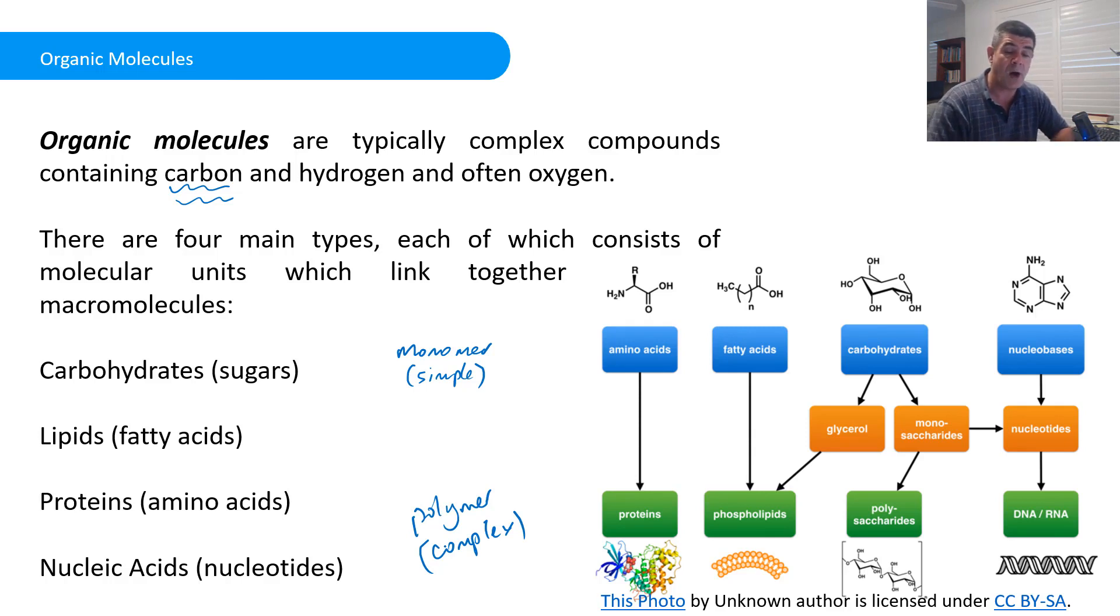So for carbohydrates, the simplest form of that is the simple sugars. And glucose is an example of a simple sugar, a monosaccharide.